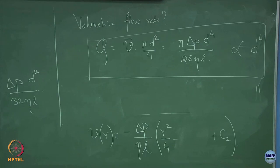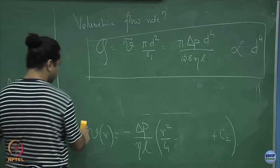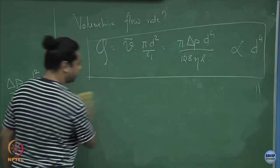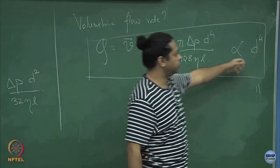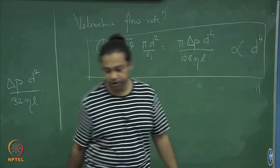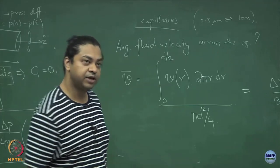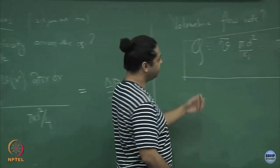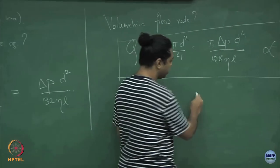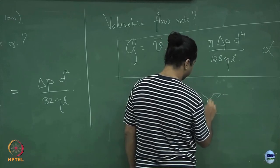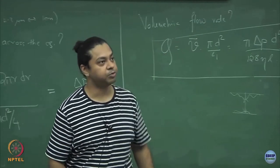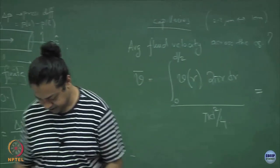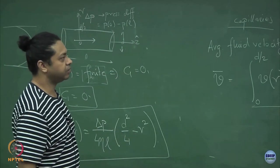This is Poiseuille's result — a very famous result in fluid flows. In the context of blood flow, this says that very small changes in the diameter or radius of the capillary can impact the flow rate by a large amount, since Q goes as the fourth power of d. If you have a blood capillary with plaque deposition that reduces the effective radius even slightly, that reduces the flow rate disproportionately and significantly.